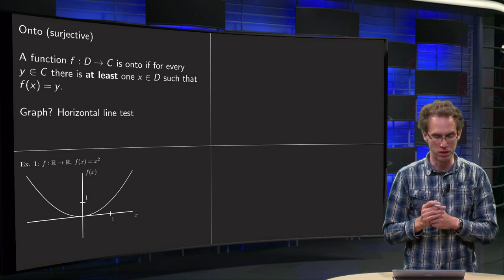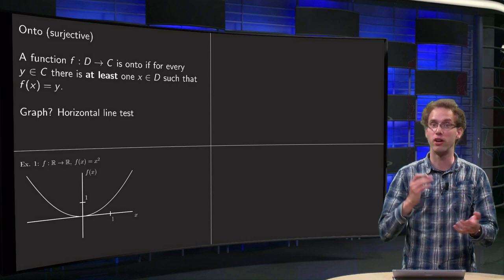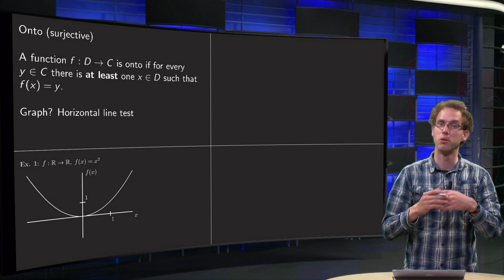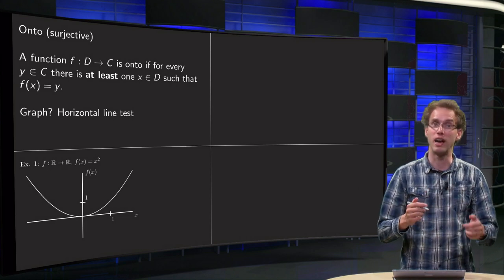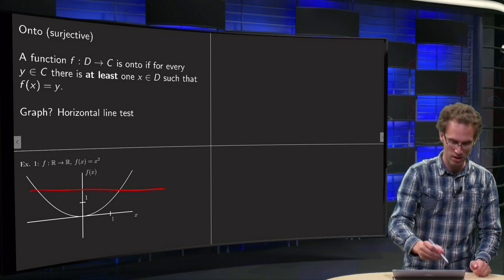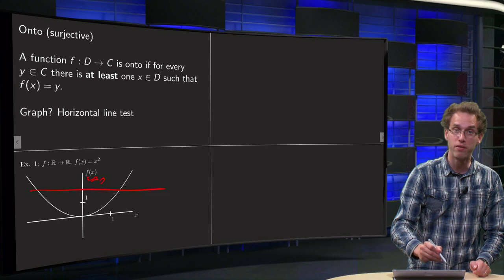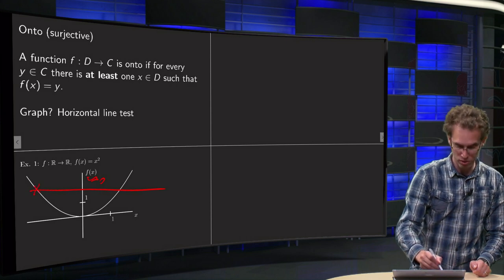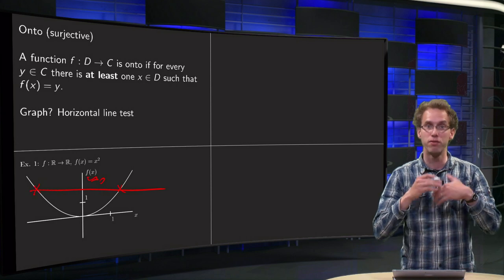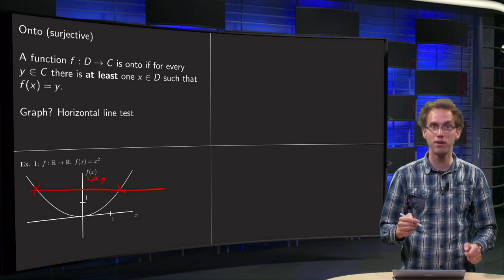Let's look at the first example, f from R to R, f(x) equals x squared. We are going to draw horizontal lines and see whether we can intersect the graph of f. Take a horizontal line here at height y₀, we see we intersect the graph even two times, over there and over there. Which means that we can find x's which are mapped to that particular value of y.